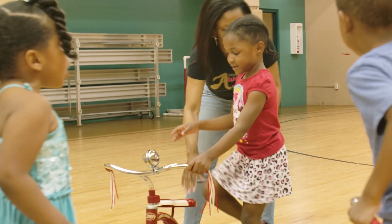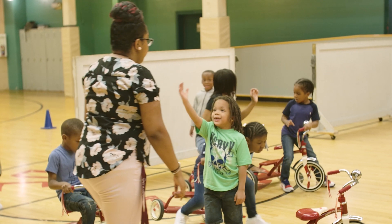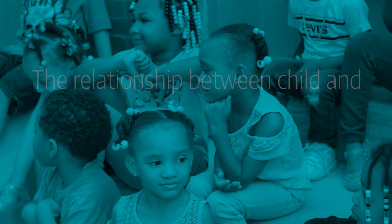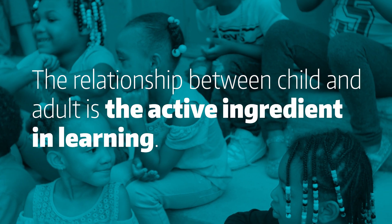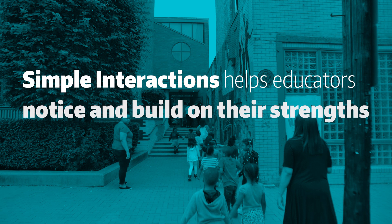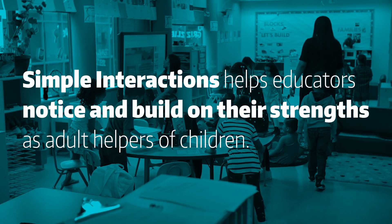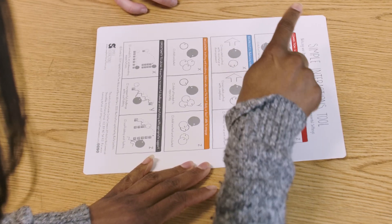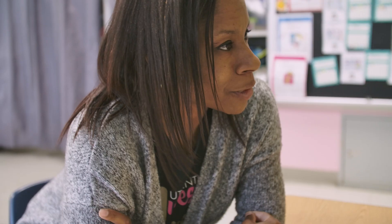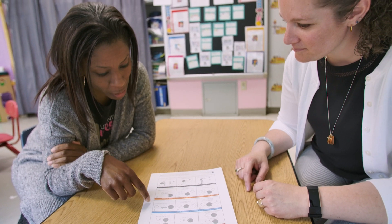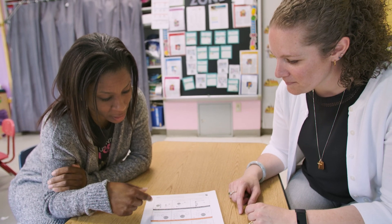What's deep and simple in all of those settings is the work that they're doing with children — just the space between an adult and a child. The Simple Interactions tool is a one-page learning tool. It's not meant to be an evaluation. It's not meant to give you a score. It's a descriptive learning tool about what interactions look like.